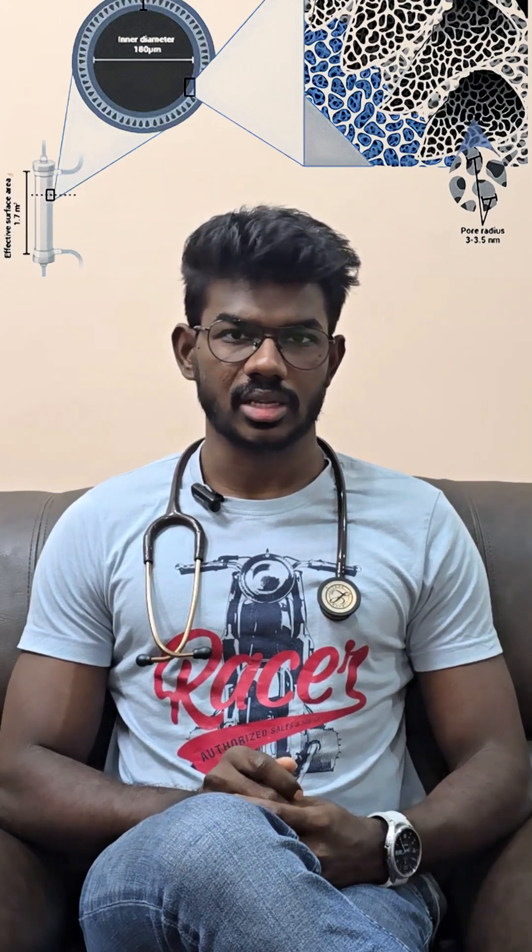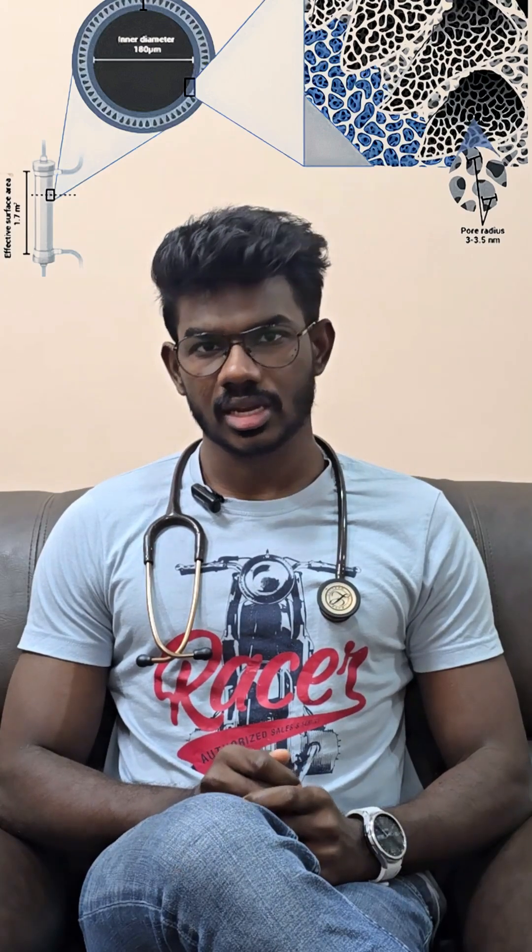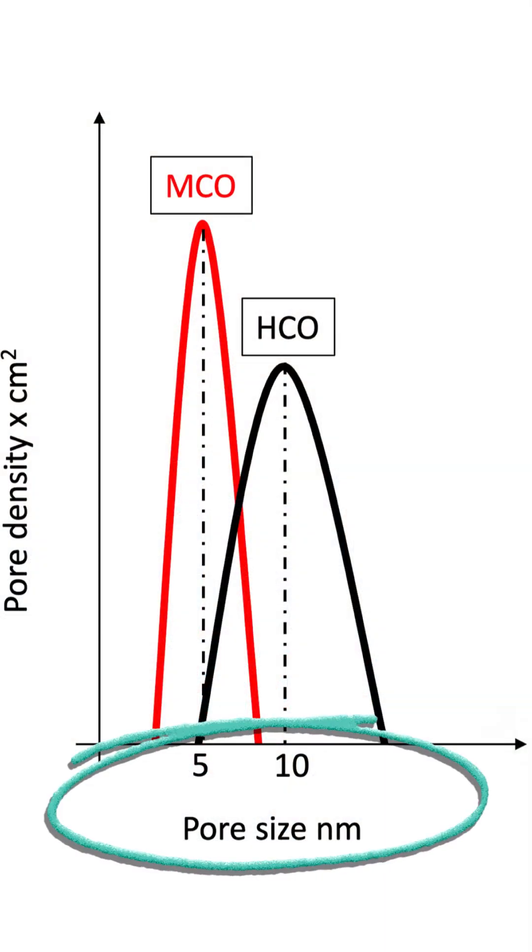Last time we spoke about how bacteria can't cross the dialyser membrane. Today, let's go even smaller: albumin. On paper, albumin is about 7 nanometers in size. And to understand the concern, dialyser pore diameter ranges from a few nanometers in low flux membranes up to roughly 10 to 20 nanometers in the newest high cutoff designs. So why doesn't albumin leak out? Let's break it down with a bit of dialyser membrane physics.